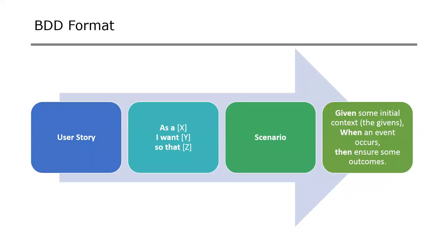The format BDD prescribes is a user story in the agile model: as a user, what I want to accomplish, so that I get the result I'm looking for. Then the business analysts get into the scenarios and give us what we call Gherkin format. Given, when, and then is the format — they provide examples that will validate using our code.